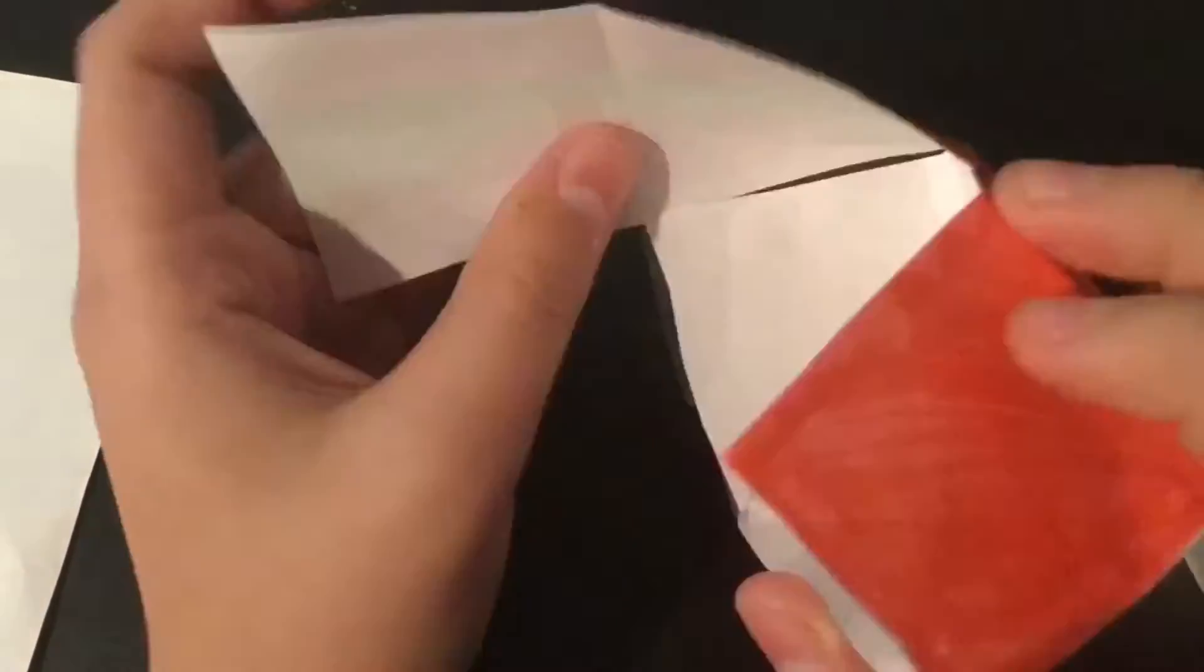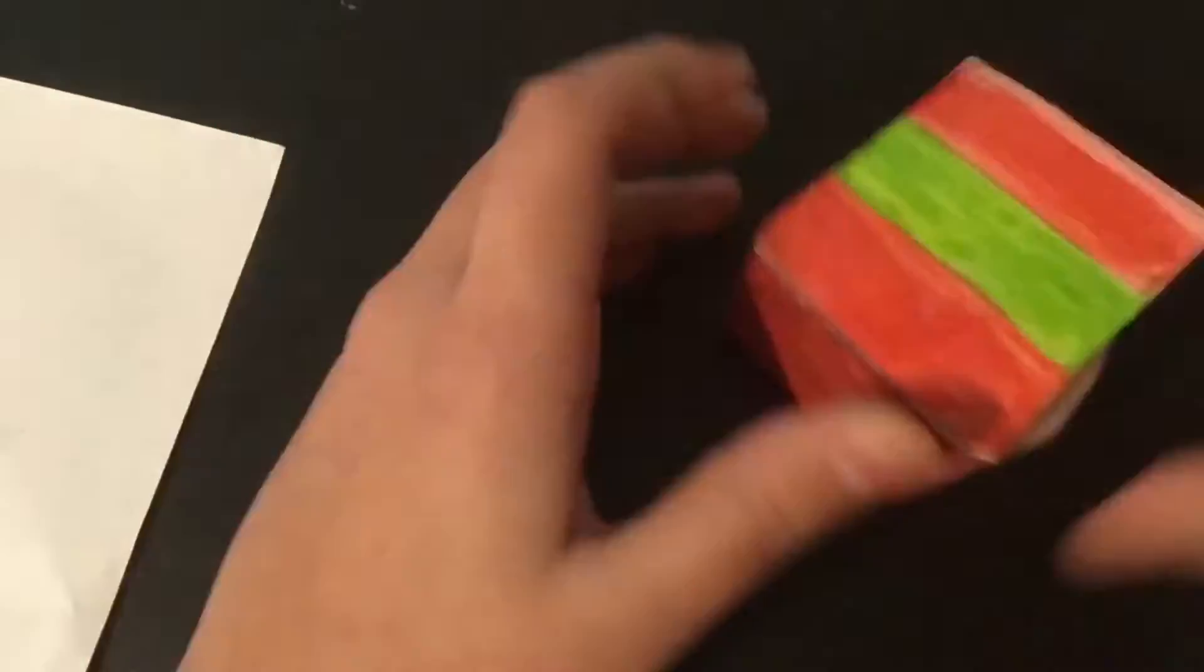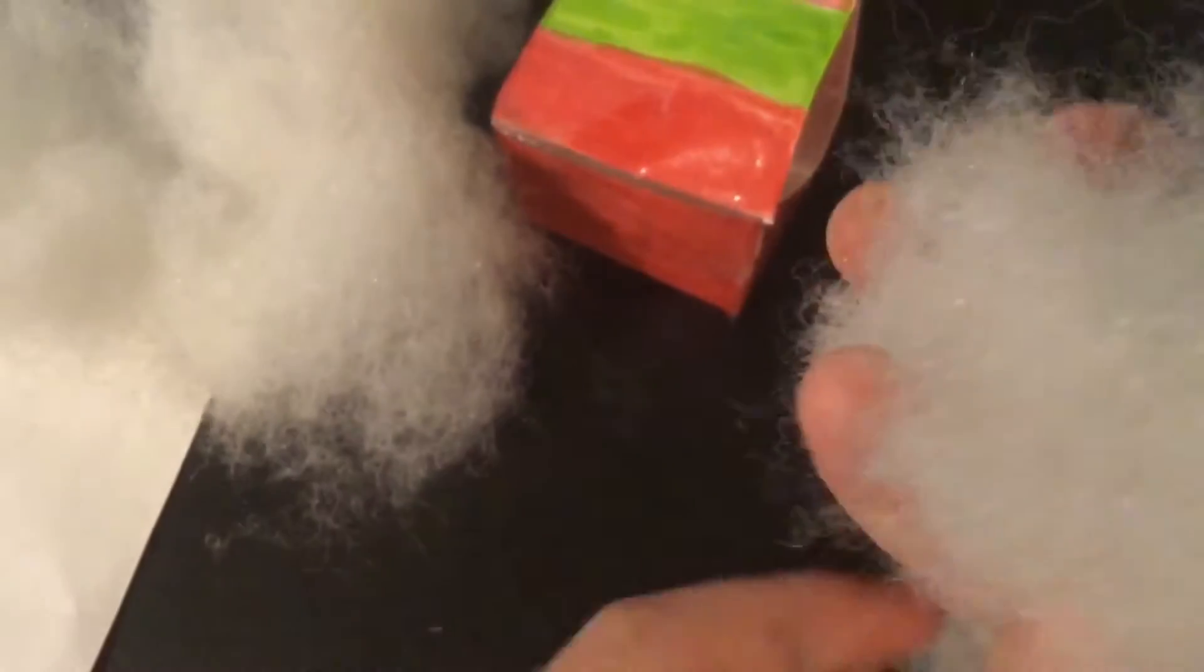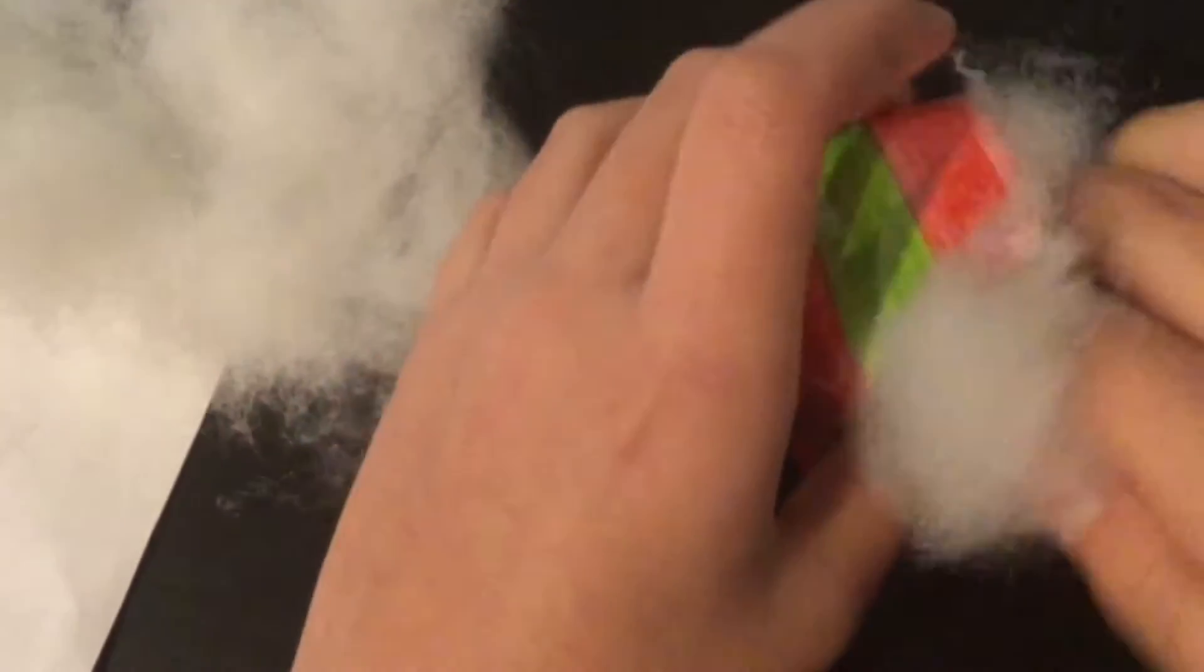I did the same process until I had one flap open so it'd be like an open box. Now I'm going to stuff it. You can stuff your paper squishies with plastic bags, old ripped up squishies, memory foam, or cotton stuffing. Another tip: when you're going to stuff with cotton, make sure to rip it apart first because it always helps.